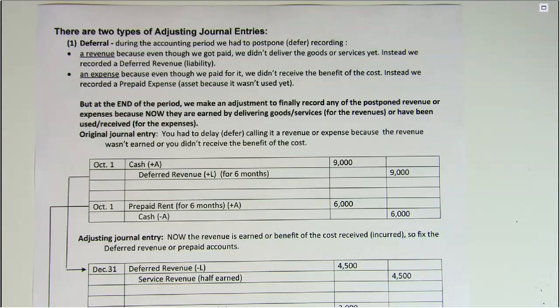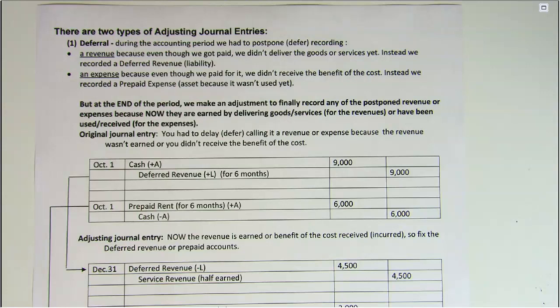But what if at the end of the accounting period some of the goods and services have been delivered? Well, then we don't owe them anymore, and we really have earned that revenue. So we should do an adjusting journal entry, taking the amount earned out of the deferred revenue and putting it into service or sales revenue.